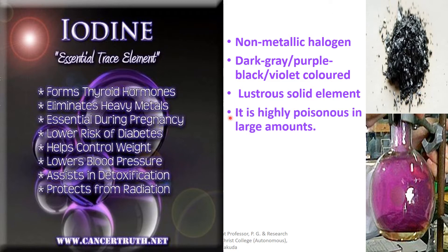It is highly poisonous in large amounts but in trace amounts it is an essential element. It forms thyroid hormones, eliminates heavy metals from the body, and is very essential during pregnancy. It affects lower risk of diabetes, helps control weight, lowers blood pressure, assists in detoxification, and protects from radiation. Iodine is also used in cancer treatment.